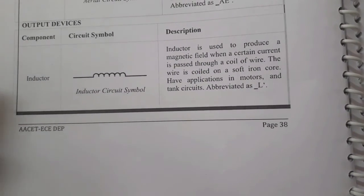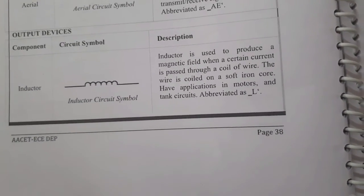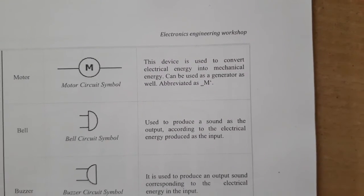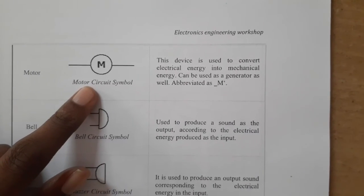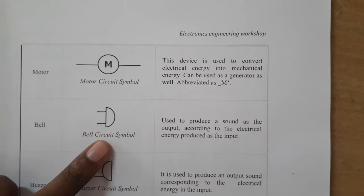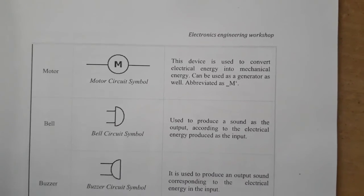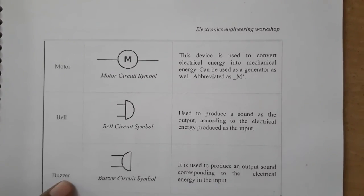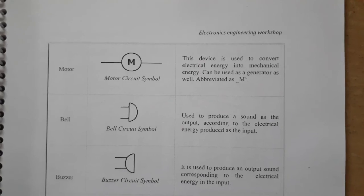Finally, we have output devices: inductors and motors. Inductors — this is the circuit symbol — produce a magnetic field when a certain amount of current is passed through the coil. Motors convert electrical energy into mechanical energy. Next is the bell, used in circuits to produce sound energy. We also have a buzzer, which similarly converts electrical energy into sound energy. Thank you.